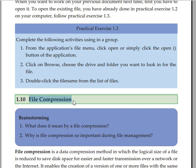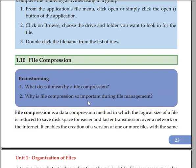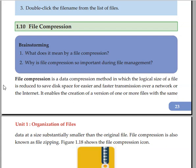File compression is a data compression method in which the logical size of a file is reduced to save disk space for easier and faster transmission over a network or the internet.